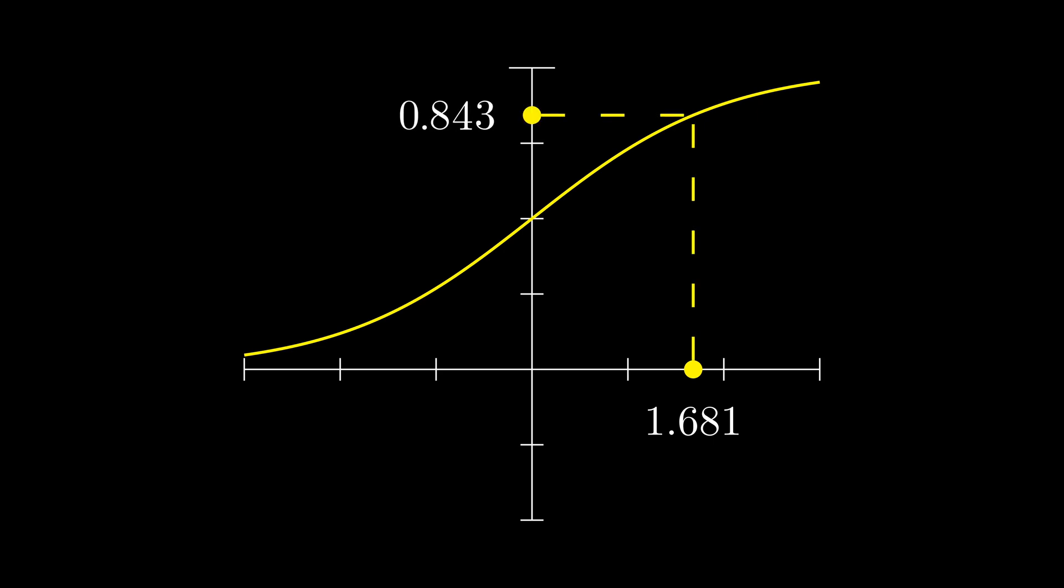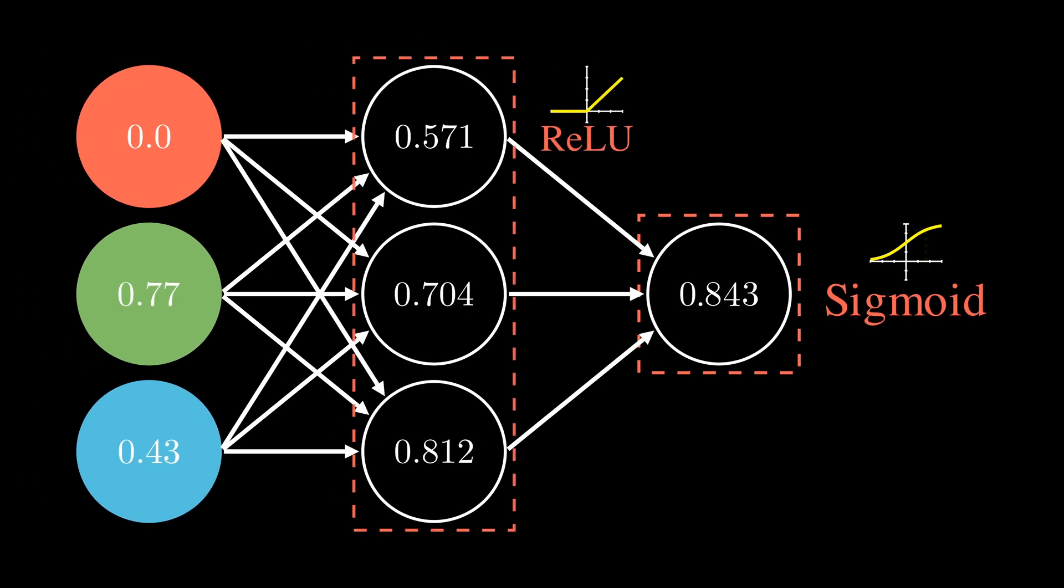We will then pass that to the sigmoid activation function. This will scale the value to be between zero and one, resembling a probability. Recall if our prediction is less than 0.5, it's light; if it's greater than or equal to 0.5, it's dark. Well, because our value is 0.843, we will categorize it as dark.